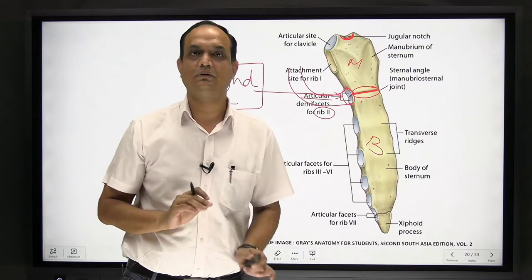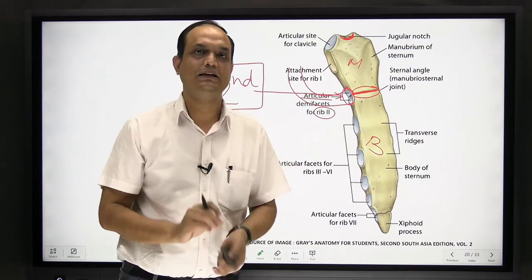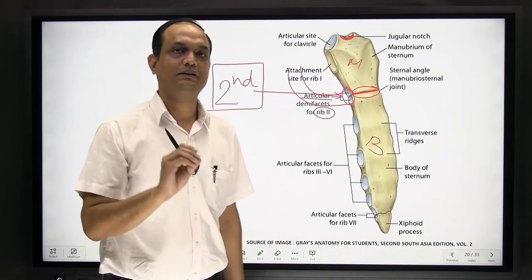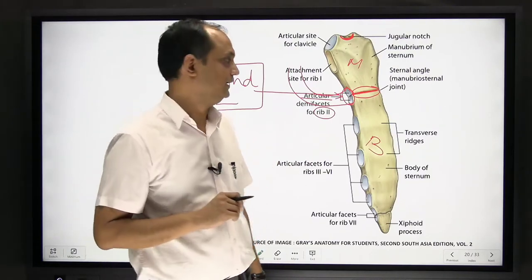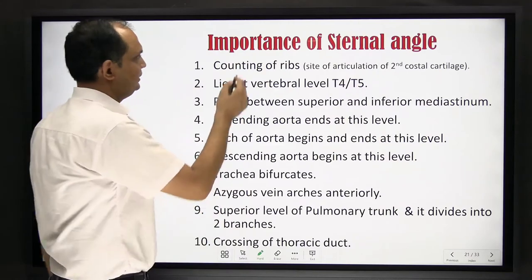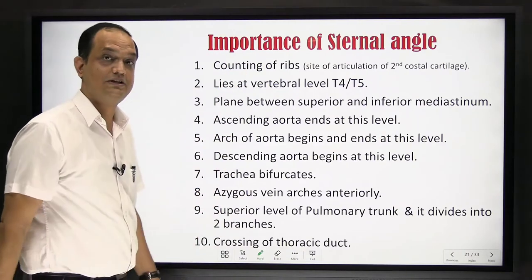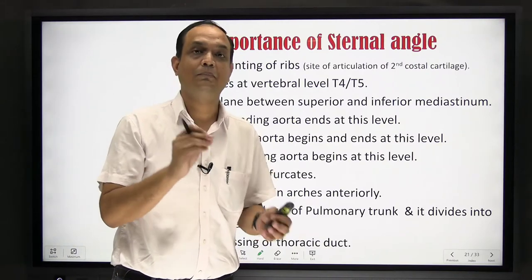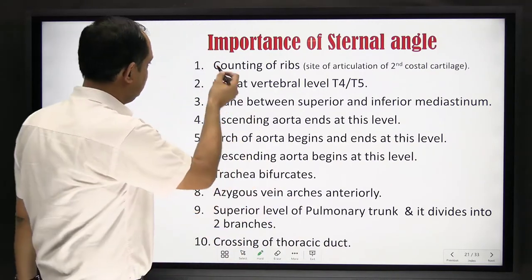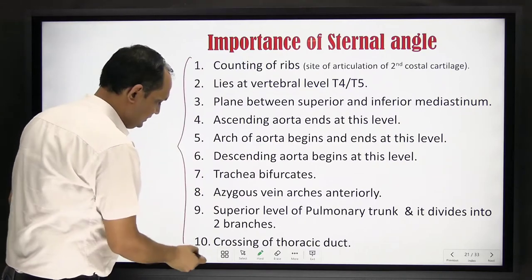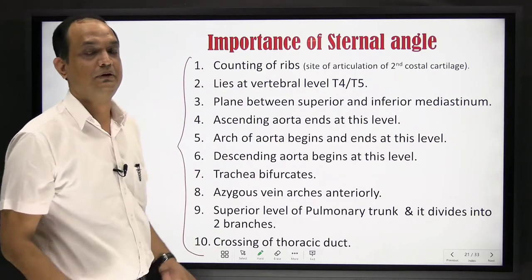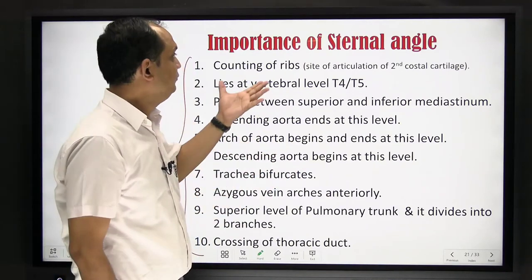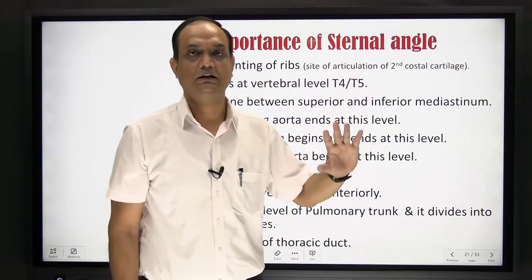So the location of the external angle is now known to us. We know what the external angle is formed by, and what type of joint the external angle is. This is the basic knowledge about the external angle. Now, what are the important changes taking place at the external angle — why do we give it so much importance? There are about 8 to 10 points you should always remember, because whenever a short note or viva comes, you are asked: what is the importance of the external angle?